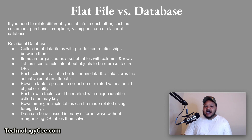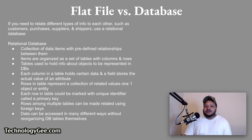A relational database is a collection of data items with predefined relationships between them. These items are organized as a set of tables with columns and rows. Each column in a table holds a certain kind of data, and a field stores the actual value of an attribute. The rows in the table represent a collection of related values of one object or entity. Each row can be marked with a unique identifier called a primary key, and rows among multiple tables can be made related using foreign keys. This data can be accessed in many different ways without reorganizing the database tables themselves.